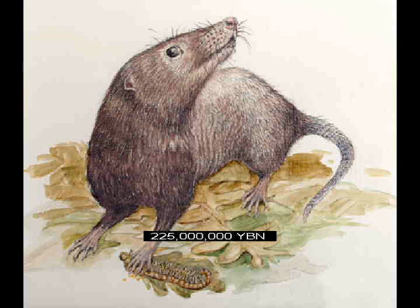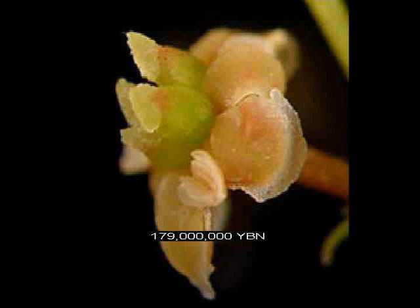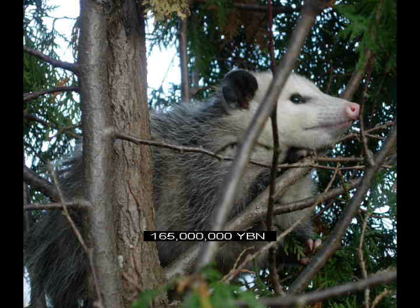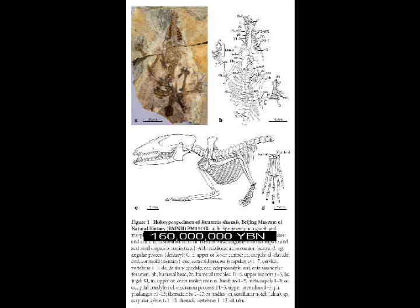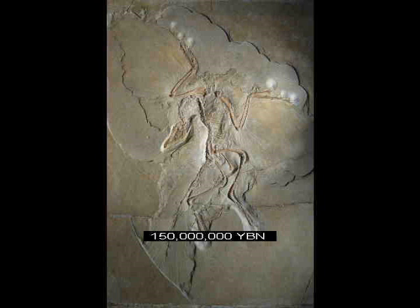Dinosaurs. Mammals. First nipple and breast. First flying vertebrate: the pterosaur. First flowering plant — fruits, nuts, vegetables. Marsupials. Placental mammals. Birds evolve. First feather.